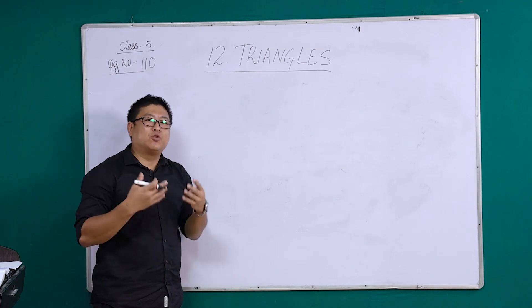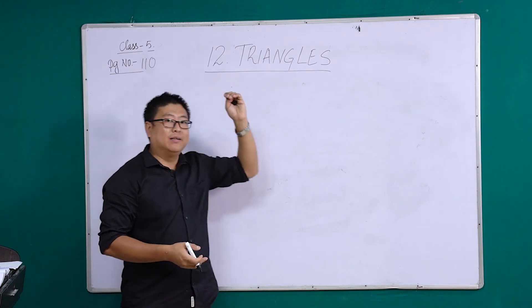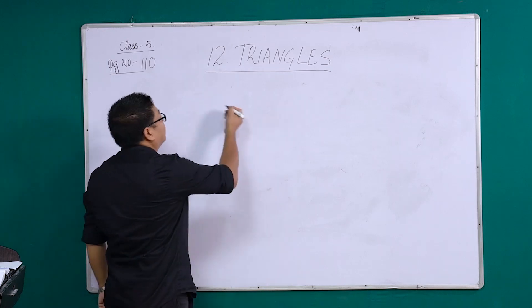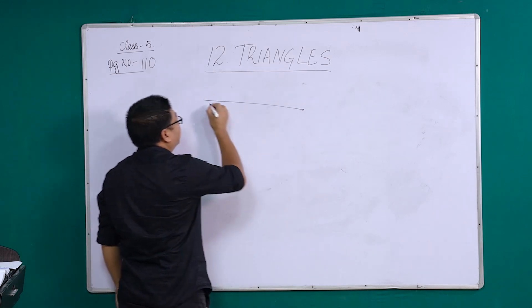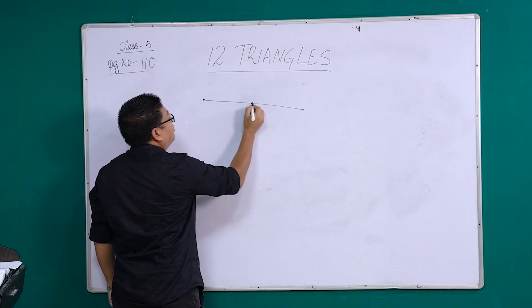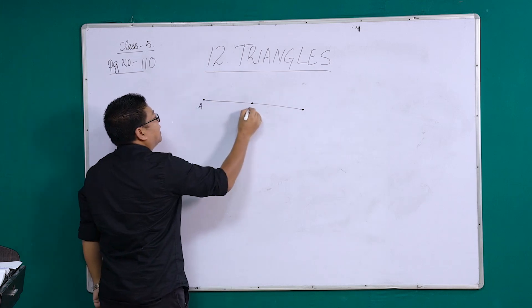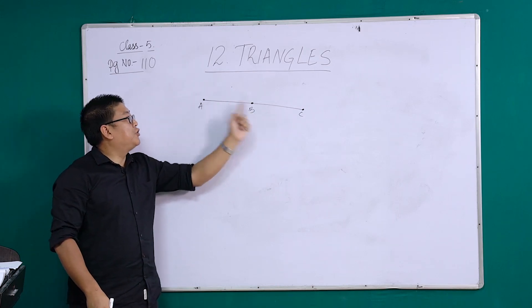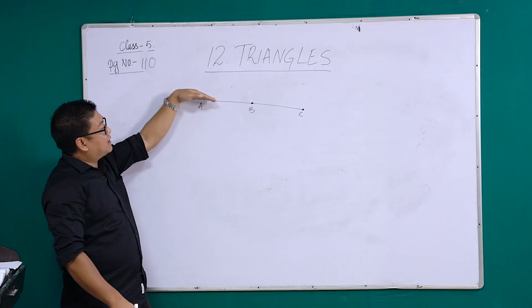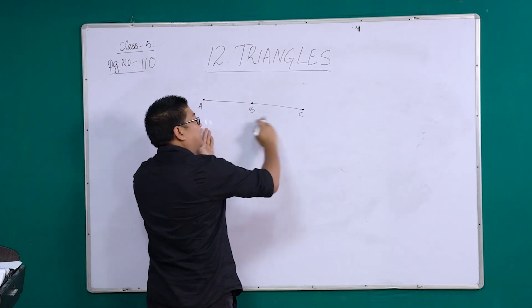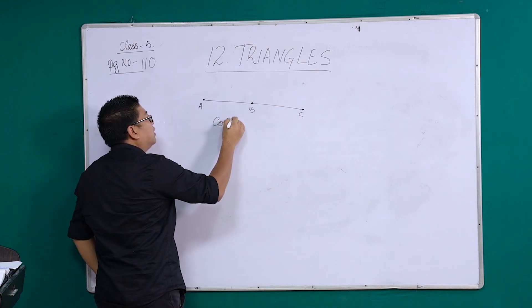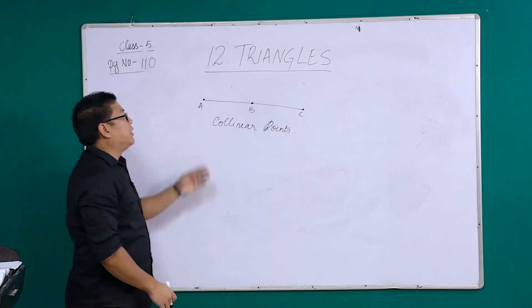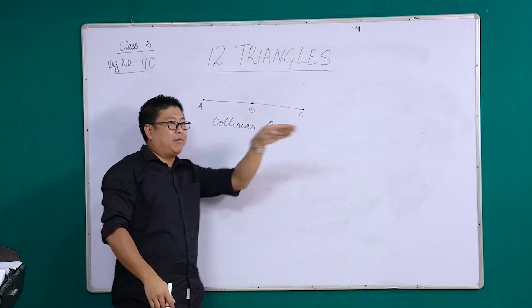So I believe we have all heard about triangles before, but before we go into triangles, let's learn about the two types of points today. The first type of point: I have a line and I have marked three points on this line. Let's name them as A, B, C. If there is a line and there are three points on it, they will all lie in the same line. So these points are called collinear points. This type of points are called collinear points, that means they lie in the same line, on the same path.